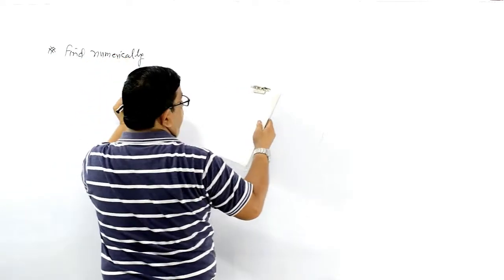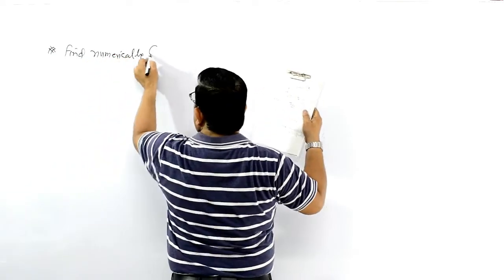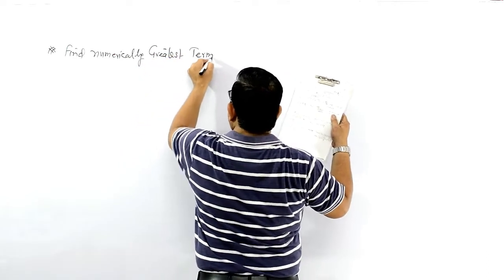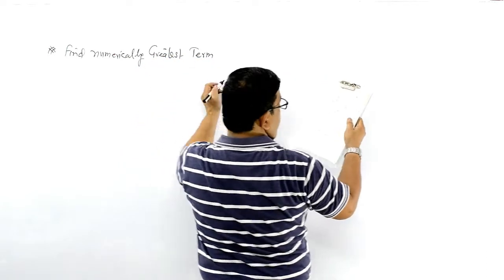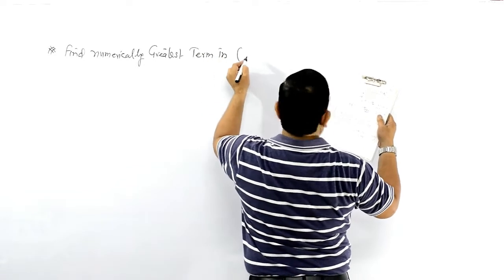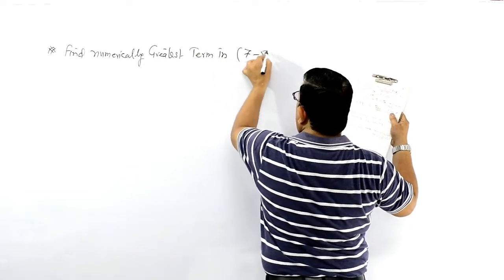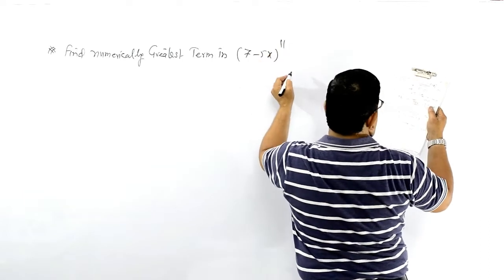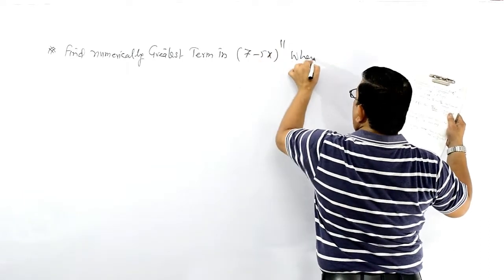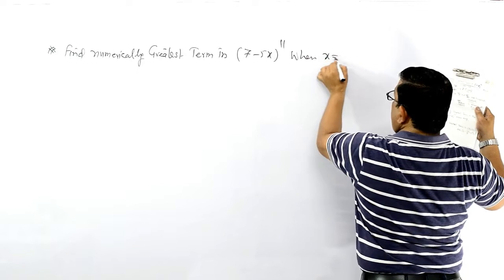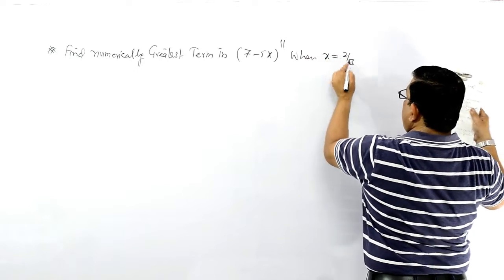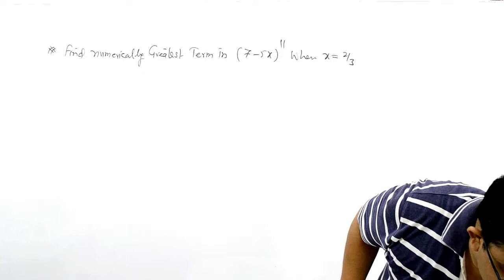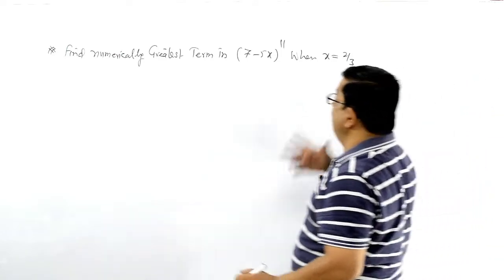Find the numerically greatest term in (7 - 5x)^11, when x = 2/3. कुछ दूसरी condition डाल दी है, और इस case में इसको find out करना है.